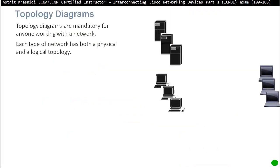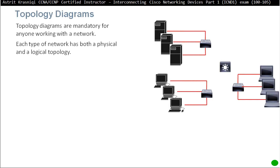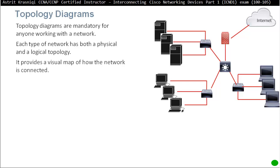So, topology diagrams. Topology diagrams are mandatory for anyone working with networks. Each type of network has both physical and logical topologies. Sometimes you go to a network and you might not find both topologies, but in reality you're meant to have two types: physical and logical.